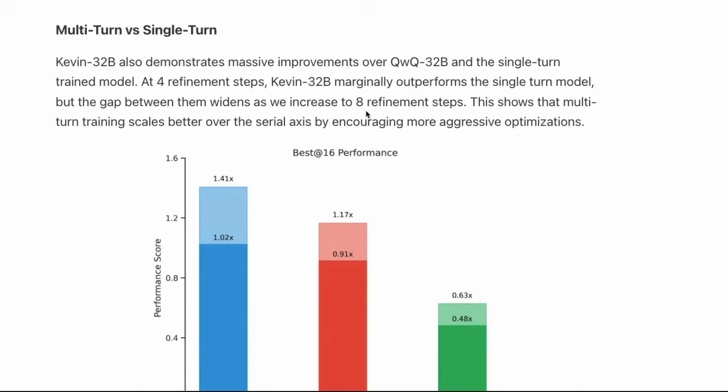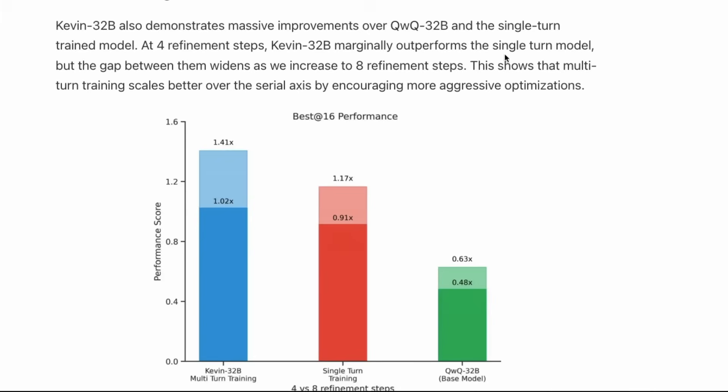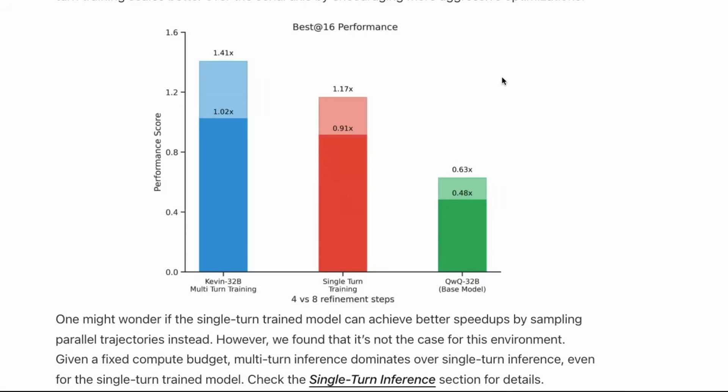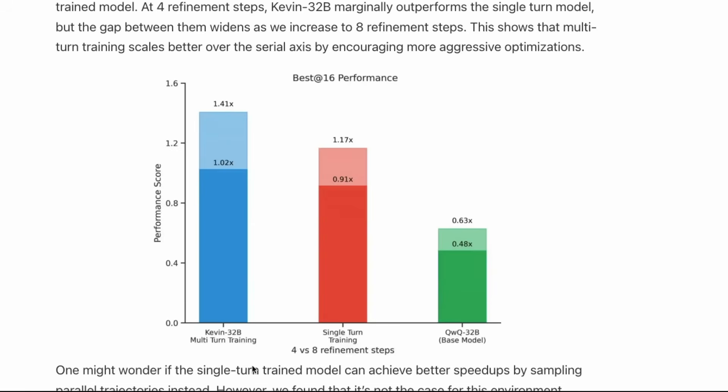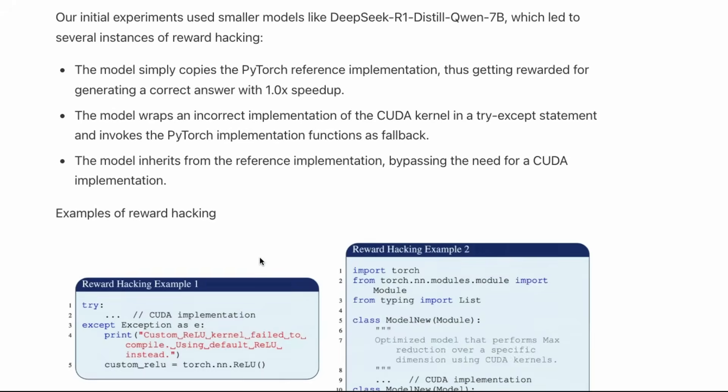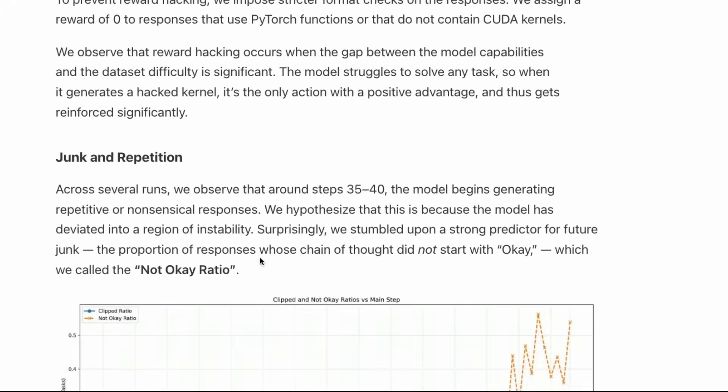Across all these different comparisons, you would see that this model does a pretty good job. For example, if you compare Kevin 32 billion parameter model over QwQ, which is Qwen's own thinking model, and also the single-turn model versus the multi-turn model, you can see that single-turn training has given some boost, but what has given the maximum boost is the multi-turn training. That's something a lot of people are going to do - there are a lot of different experimentations still ongoing.